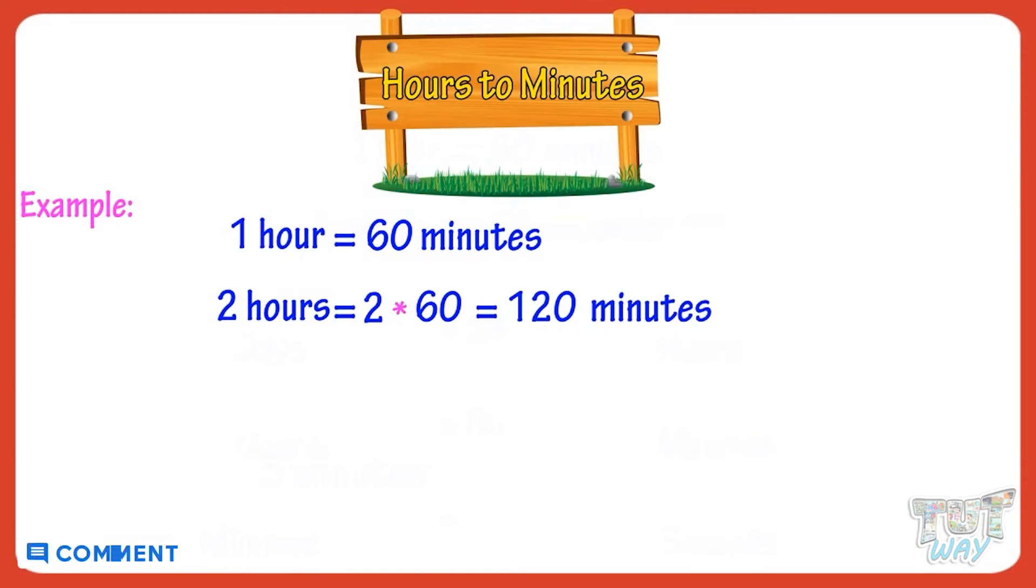Now let's convert three hours into minutes. One hour equals 60 minutes. So three hours equals three multiplied by 60. That is 180 minutes.